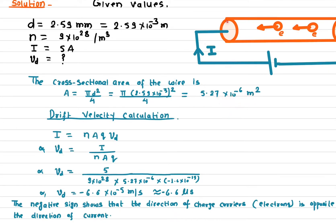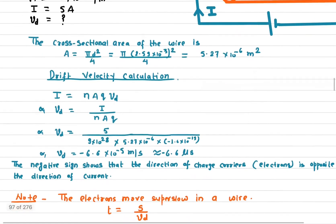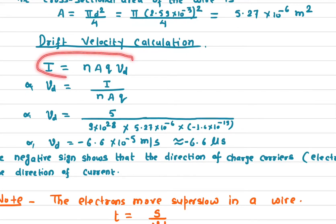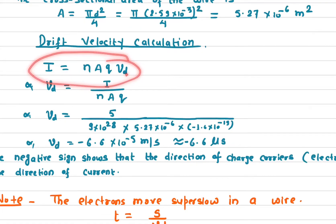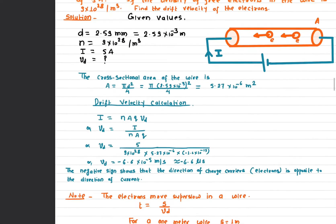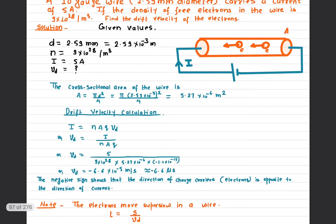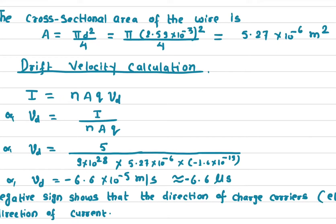The current in a wire is given by the equation I = nAQv, where n is the carrier density (the density of free electrons), A is the cross-sectional area, Q is the charge, and v is the drift velocity. Solving for the drift velocity gives v = I / (nAQ).